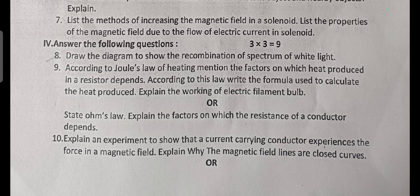Next, three-mark questions — three questions. Draw the diagram to show the recombination of the spectrum of white light (spectrum chapter, two-triangle diagram). Question 9: According to Joule's law of heating, mention the factors on which heat produced in a resistor depends, write the formula, and explain the working of an electric filament bulb. Or: state Ohm's law and explain the factors on which the resistance of a conductor depends. Question 10: Explain the experiment to show that a current-carrying conductor experiences force in a magnetic field, and explain why magnetic field lines are closed curves.